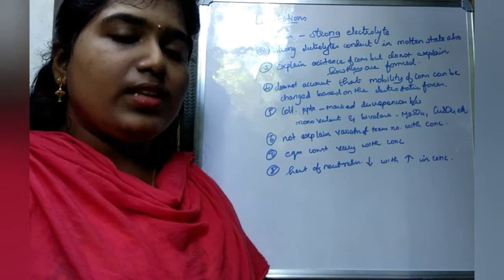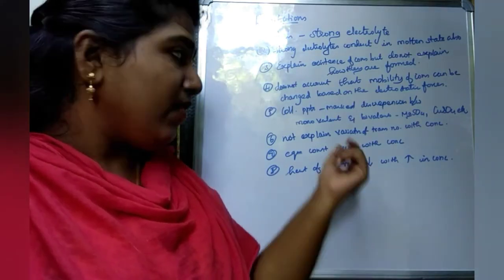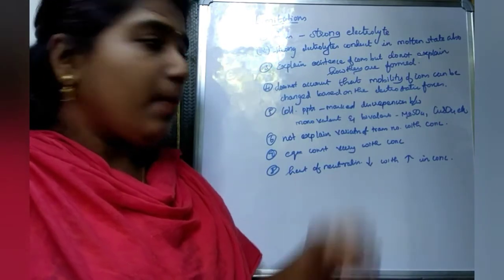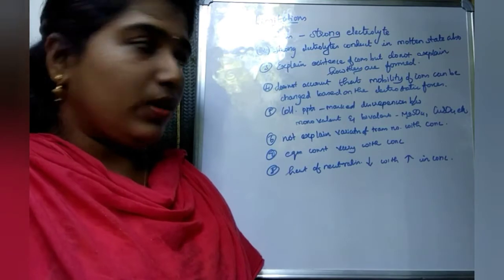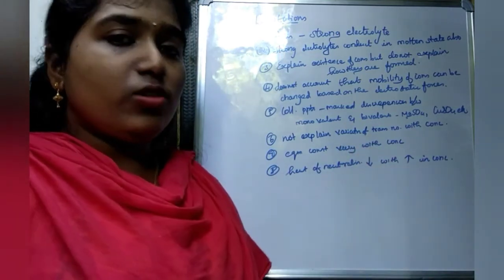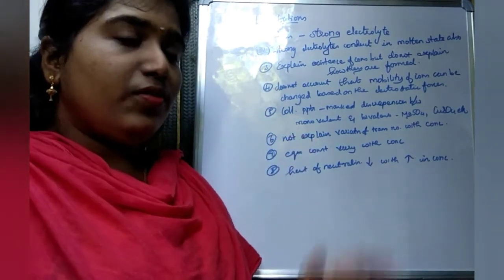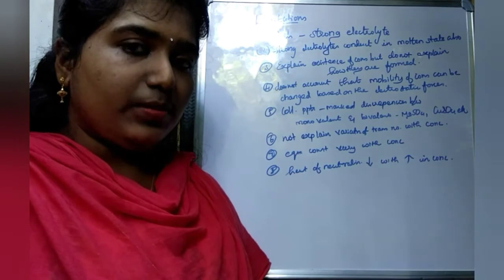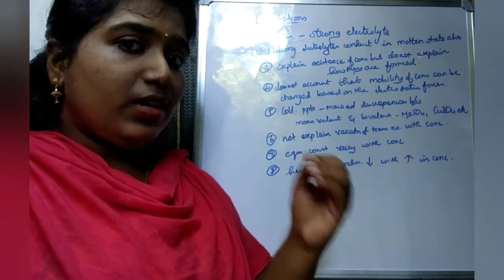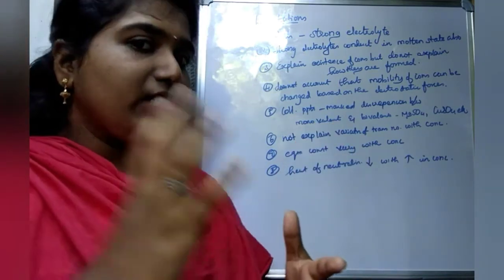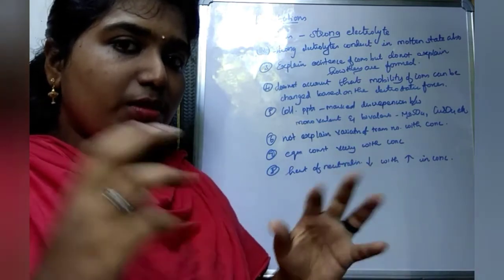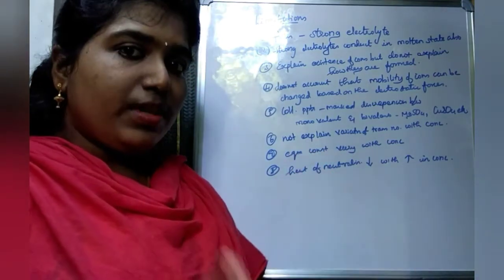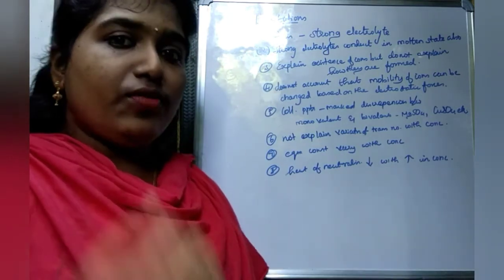The fifth limitation concerns colligative properties of bivalent electrolytes like MgSO₄ (Mg²+ and SO₄²−), where there are variations in values that the theory cannot explain. The sixth limitation is that Arrhenius theory does not explain the variation of transport number with concentration. The seventh limitation is that it does not explain that the equilibrium constant varies with concentration.